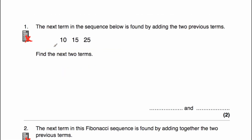So question number one says the next term in the sequence below is found by adding the two previous terms. As you can see, if we add the first two terms, 10 plus 15, we get 25. So if we want to find the next term, the fourth term, we're going to add the second and third term — the two terms before it. So we're going to do 15 plus 25, and 15 plus 25 is equal to 40, so the next term is 40.